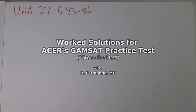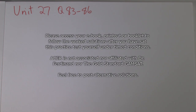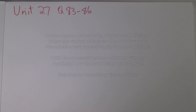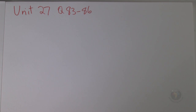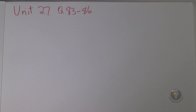Unit 27, questions 83 to 86. This section has some organic chemistry, looking at Fischer projections, which are two-dimensional ways to represent three-dimensional structures.